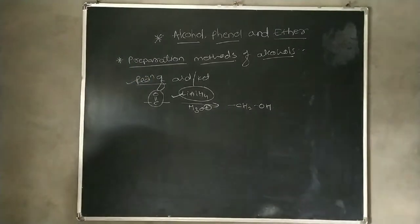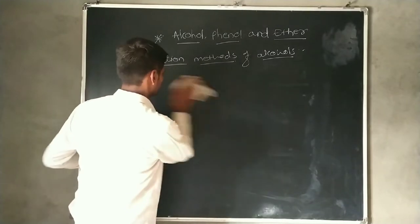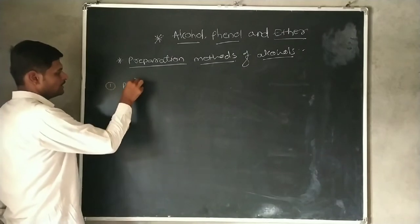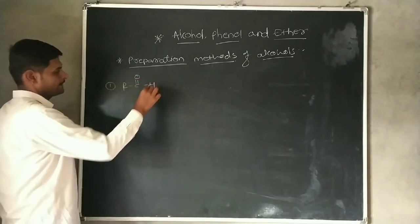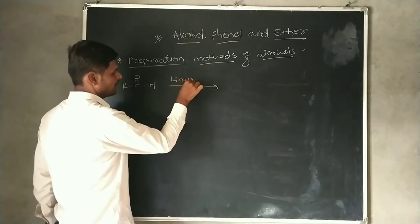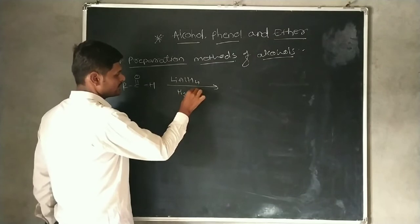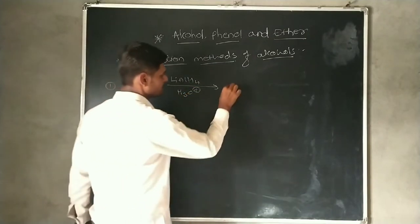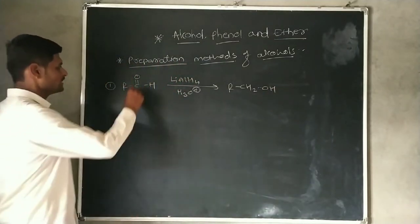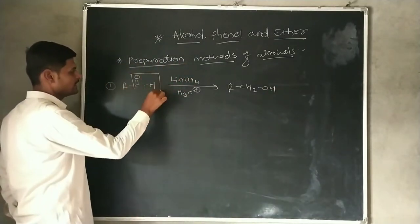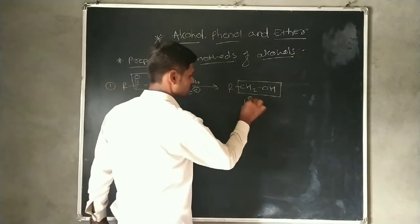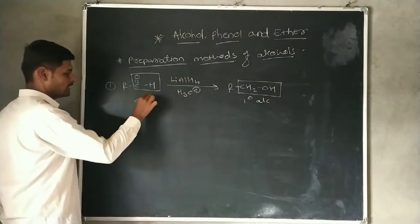The trick is that when aldehyde is reacted with lithium aluminium hydride and it undergoes acid hydrolysis, then it gives a primary alcohol. In this case, the aldehydic functional group gets converted into a CH₂OH group — this is a primary alcohol, and this one is an aldehyde.